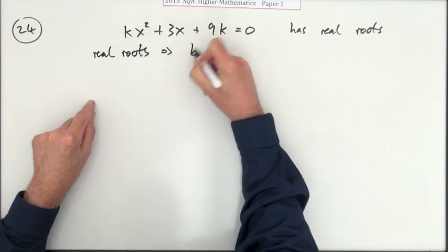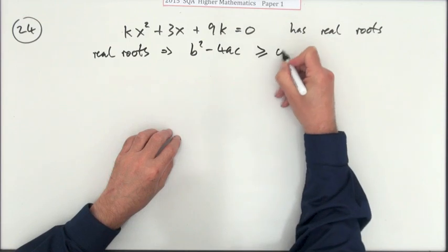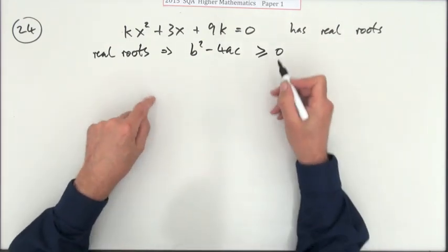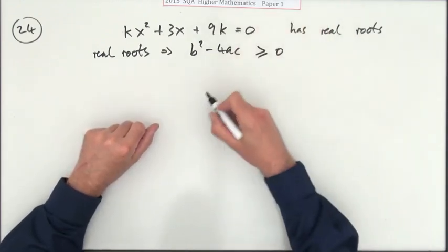Because it's still real roots if there's only the one equal pair. So what are the bits then? b is the coefficient of x.